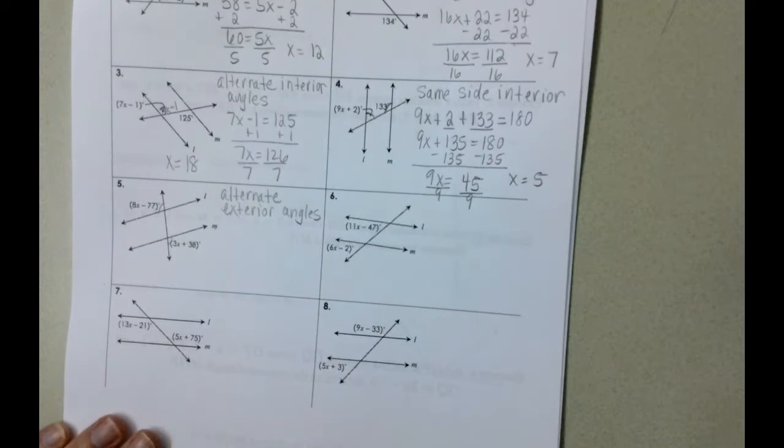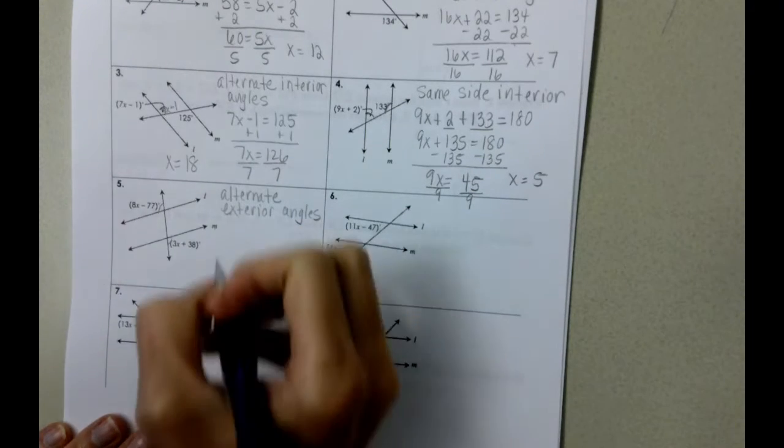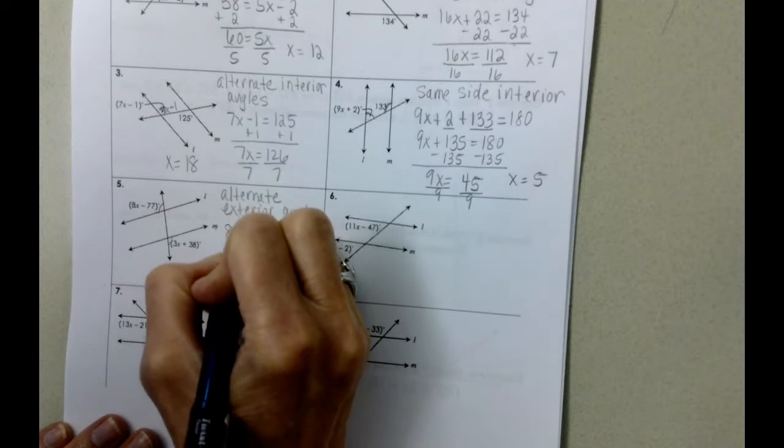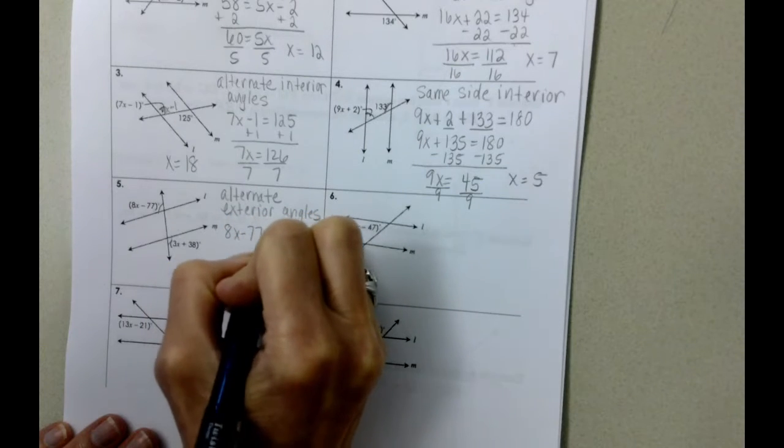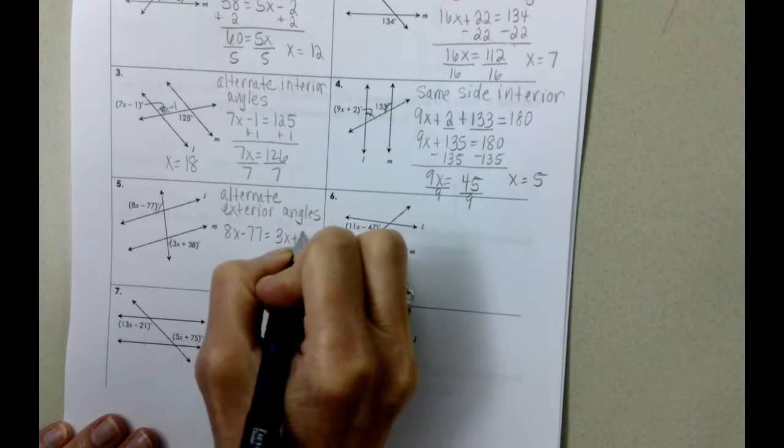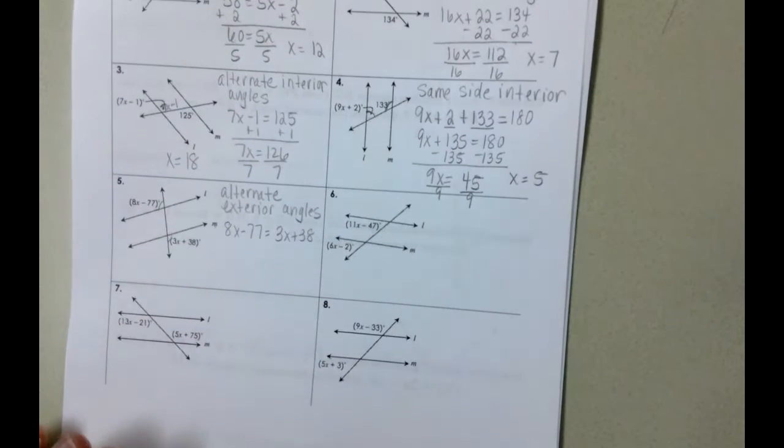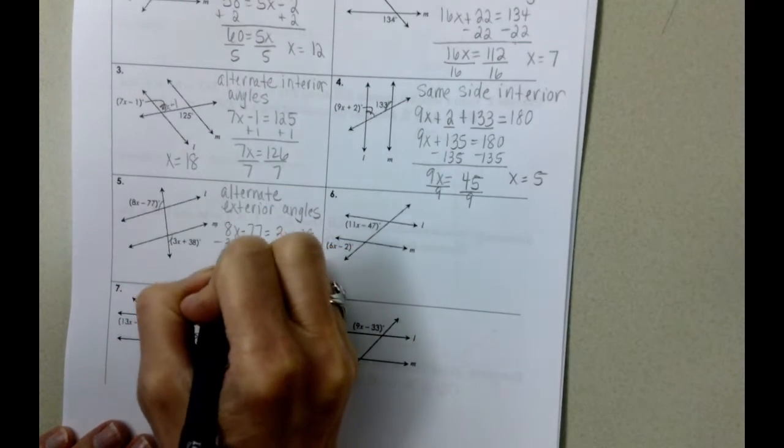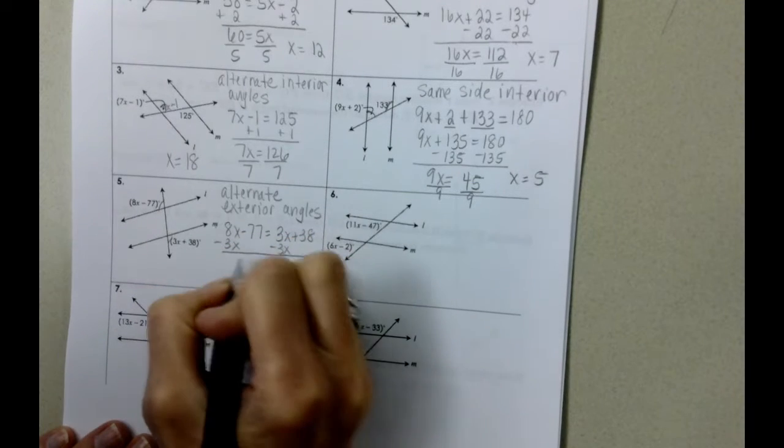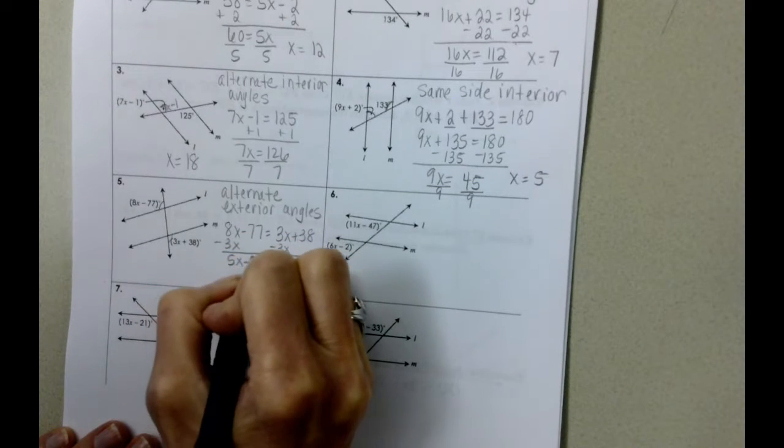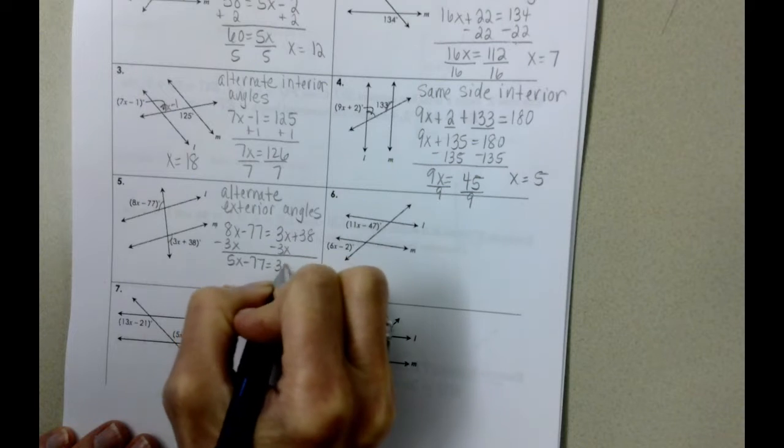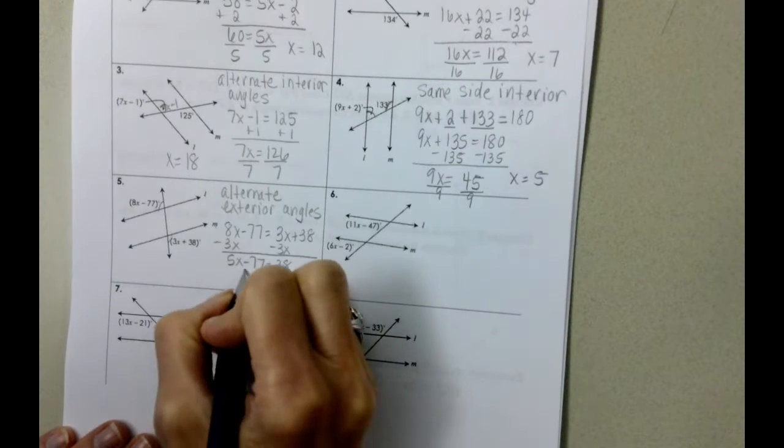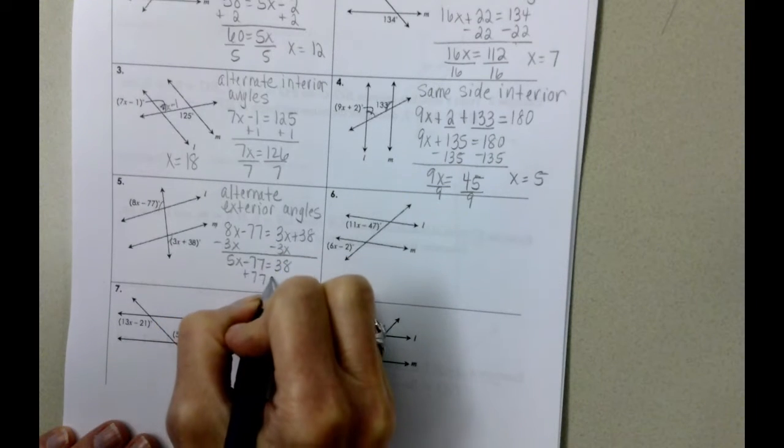And what we know about alternate exterior is that they are equal. 8X minus 77 equals 3X plus 38. I'm going to move my letter to the left. And we get 5X minus 77 equals 38. And we can add 77 to both sides.